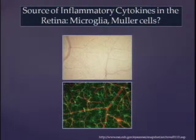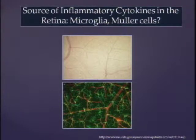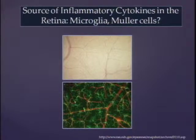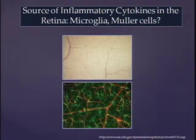In the retina, if you look at the capillaries using trypsin digest flatmounts, the microglia in the retina are in close proximity to the blood vessels and capillaries — shown here by co-immunolocalization of microglia and retinal capillaries. They are in close physical contact, and this is important because I think the source of inflammatory cytokines in the diabetic retina is probably either the microglia or the Mueller cells.